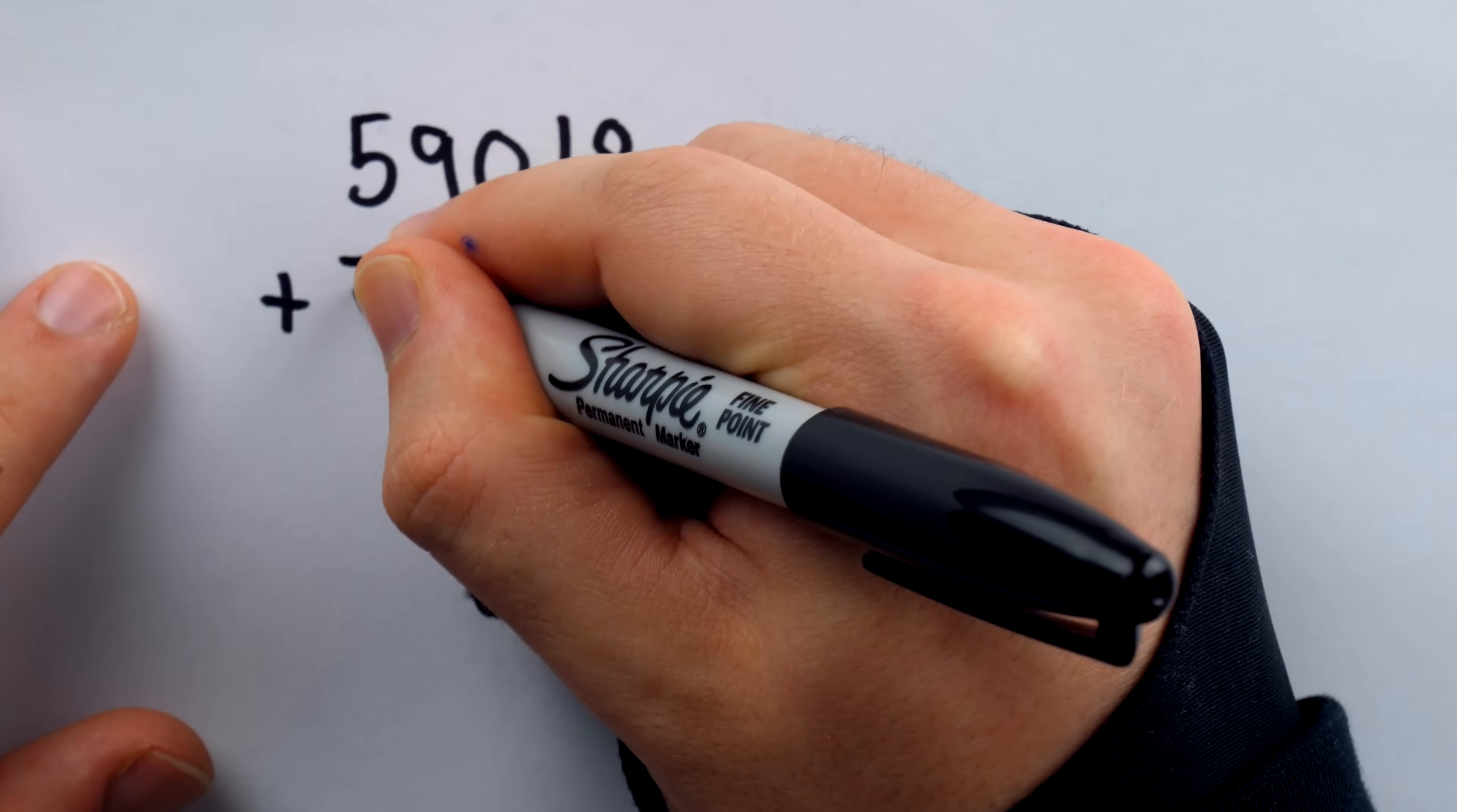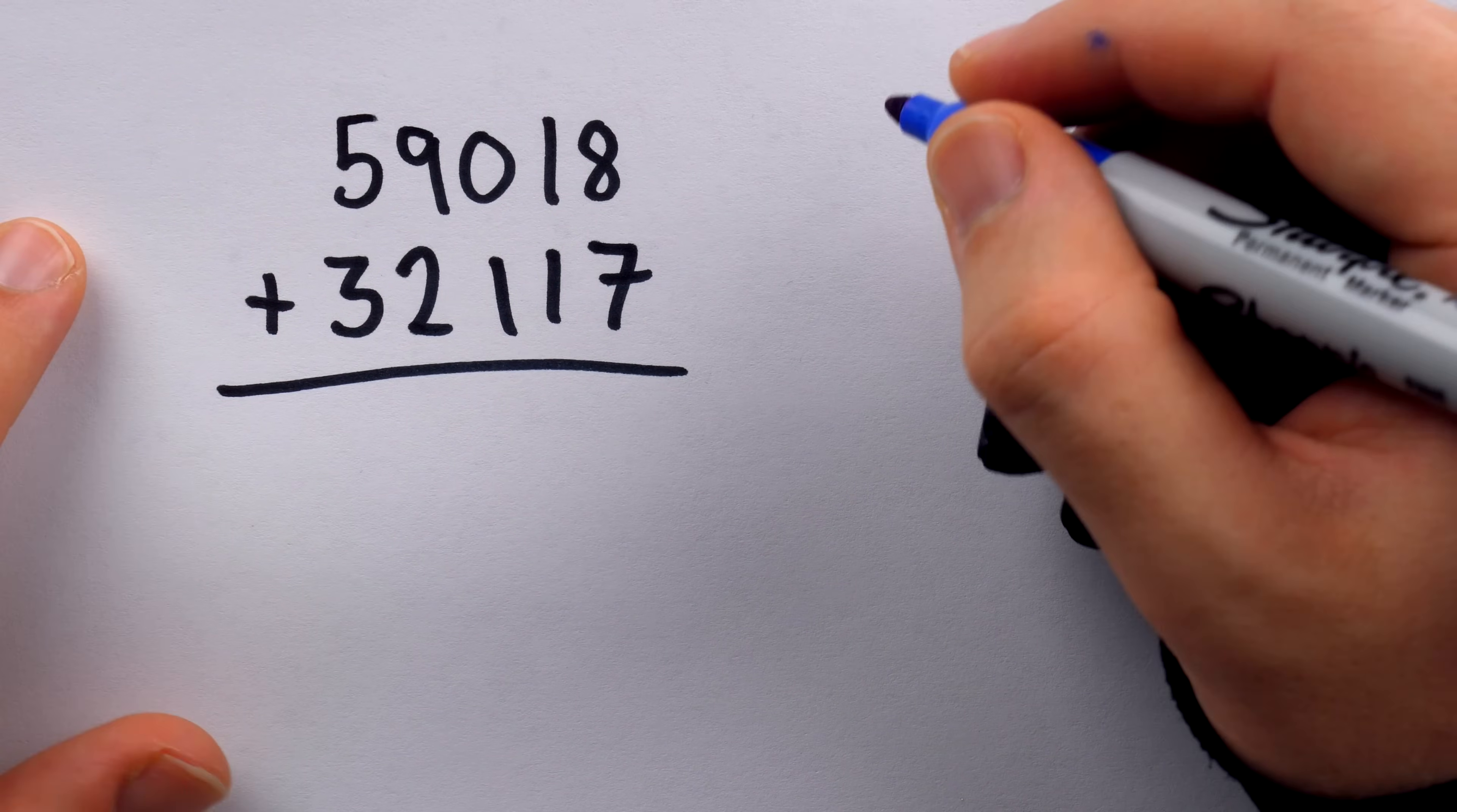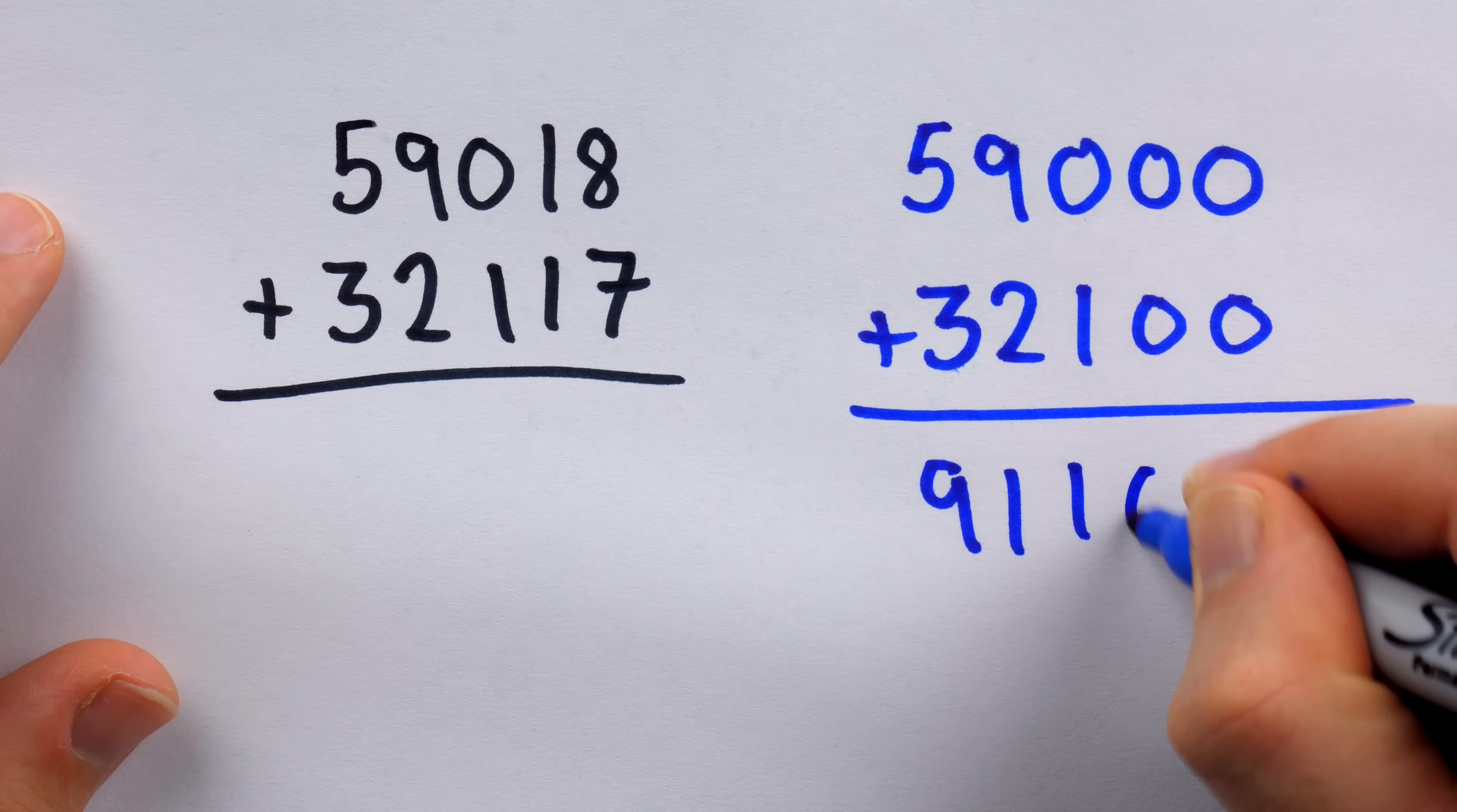And if you're not convinced of the value of estimation as a skill, let me try to convince you real quick. Suppose we're doing some five digit addition, 59,018 plus 32,117. Maybe I don't want to do this in my head because I might make a little mistake and I don't want to take the time to do it with pencil and paper. We can estimate it very accurately though, if we just round the numbers to the nearest hundred. If we round to the nearest hundred, each number will be changed at most by 50. And so at most, our final answer will be off by 100. If we round to the nearest hundred, this becomes 59,000 plus 32,100. And this is pretty darn easy. 59 plus 32 is 91. And then there's a hundred. So it's 91,100.